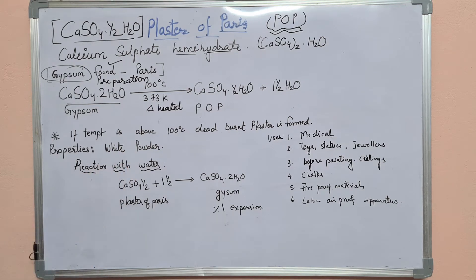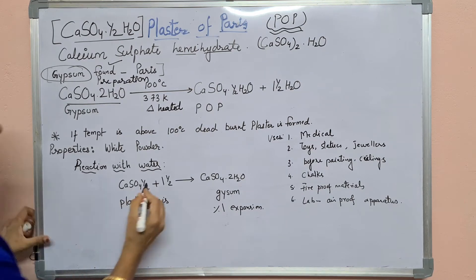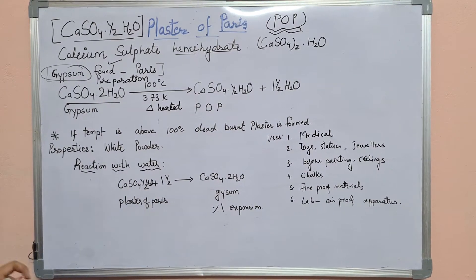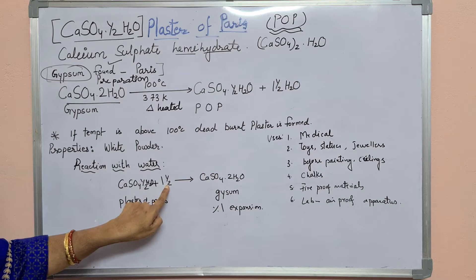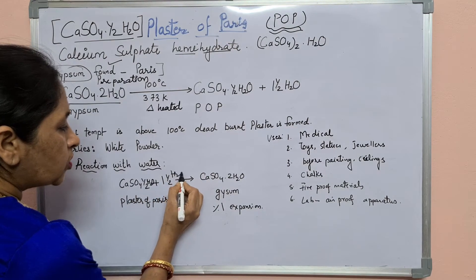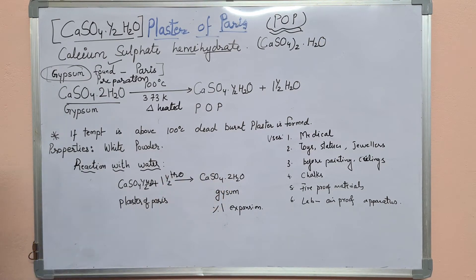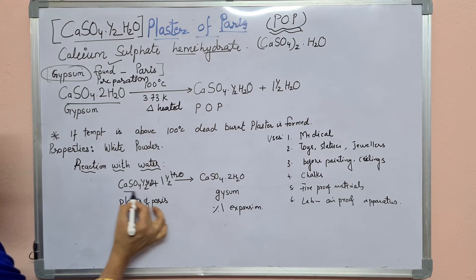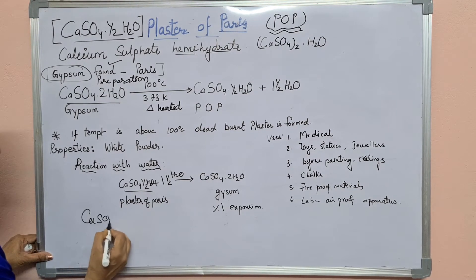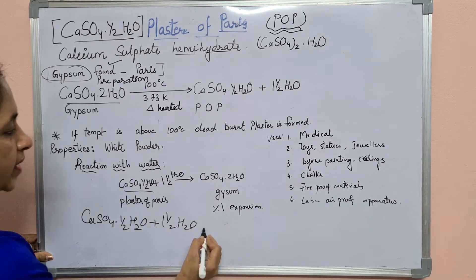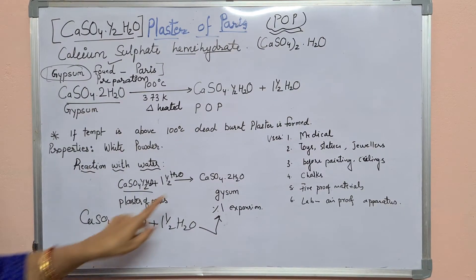Now the reaction with water. Plaster of Paris, CaSO4·½H2O, plus one and a half water molecules. It forms back gypsum. When we add one and a half water to plaster of Paris, it gives you gypsum, CaSO4·2H2O.